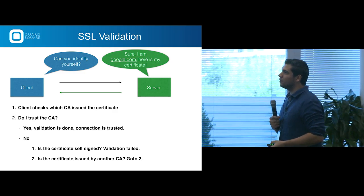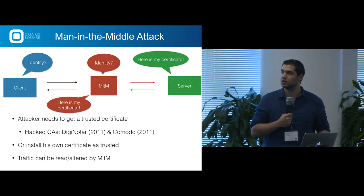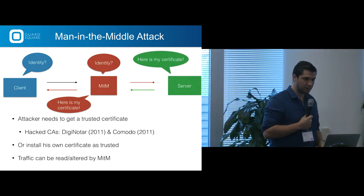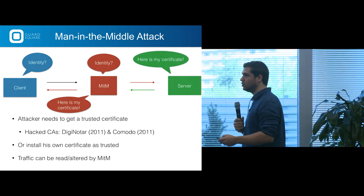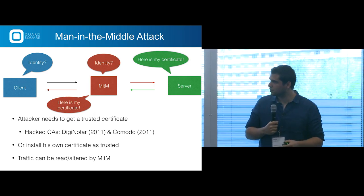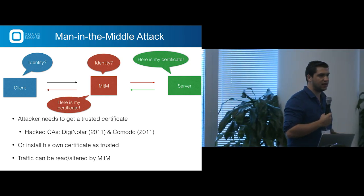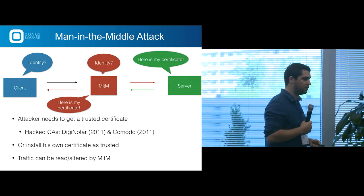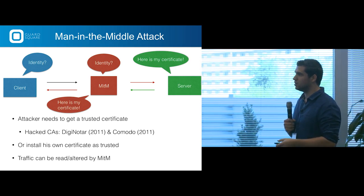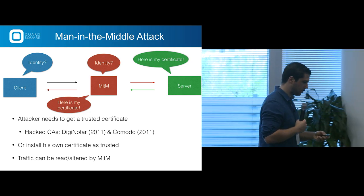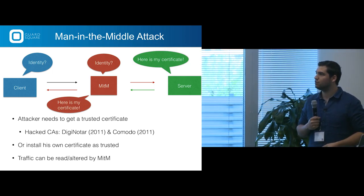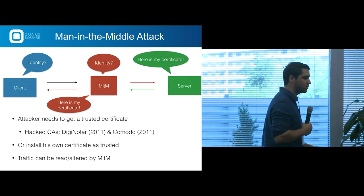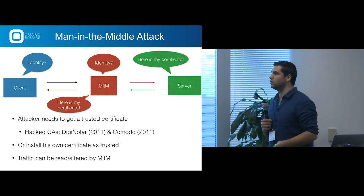You need to understand how a man-in-the-middle attack works. An attacker needs to get a trusted certificate on your device. It can use a hacked CA — hackers have hacked root CAs like DigiNotar and Comodo, started issuing certificates for themselves, and since devices trusted those CAs, those rogue certificates were trusted too. Or an attacker can just install their own certificate if they have physical access to the device and mark it as trusted in Android. When that's in place, all traffic can be read or altered by the man in the middle.